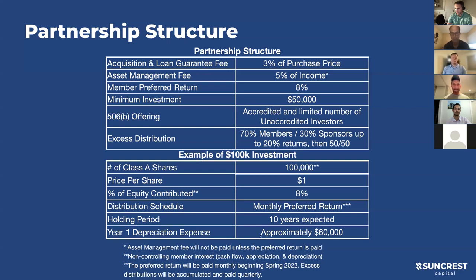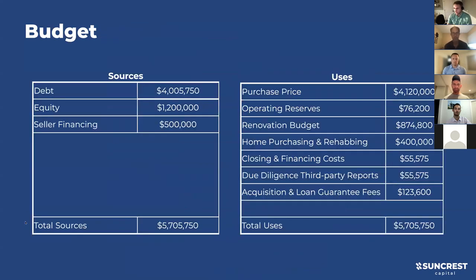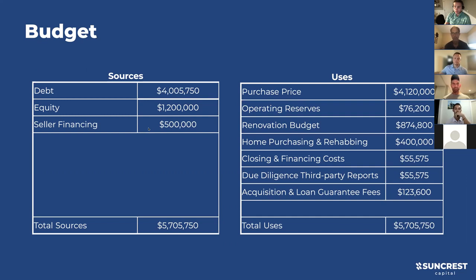On depreciation and taxes: the cost segregation study will give you depreciation expenses up front, and we have a lot of other passive cash flow that's taxed more favorably than normal earned income. The total sources and uses add up to about $5.7 million, which assumes we're buying the Fairfield project. We have $4 million in debt from the bank, $1.2 million in equity from all of us and investors, and Rolling Meadows' seller is doing $500,000 in seller financing terms - which is part of why we don't need as much equity.